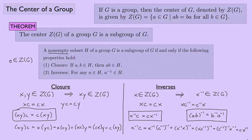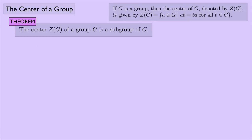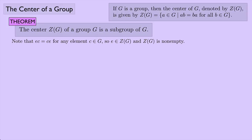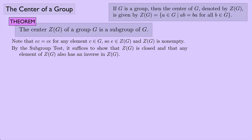Now for the formal proof. The theorem states: the center Z of G of a group G is a subgroup of G. First, I note that the identity element E is in the center, so the center is non-empty. Now I'm able to use the subgroup test, which requires showing the center is closed and that any element of the center also has its inverse in the center.